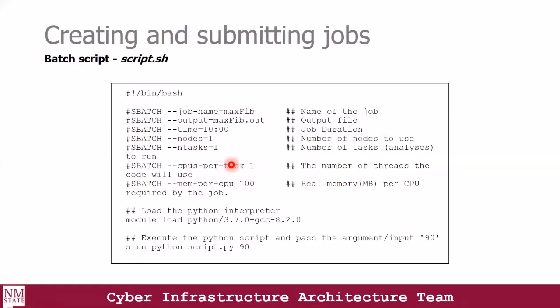The number of tasks requested of SLURM is the number of processes that will be started by srun. After your script has been submitted and resources are allocated, srun immediately executes the script on the remote host — it is used to launch the processes. If your program is a parallel MPI program, srun takes care of creating all the MPI processes. If not, srun will run your program as many times as specified by the ntasks option. For this example, we set ntasks equal to one because our program is a simple program that doesn't require parallel implementation.